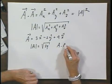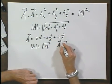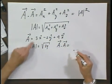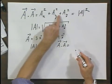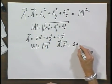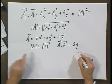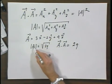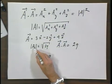But a dot a, which is a scalar, and you can check that easily by applying this rule, you will see that that is twenty-nine, which is exactly the square of the magnitude of a.